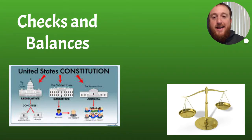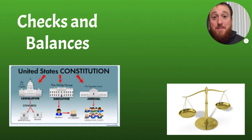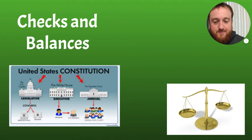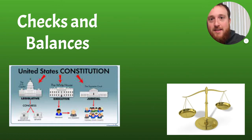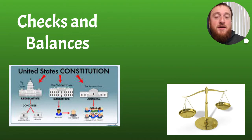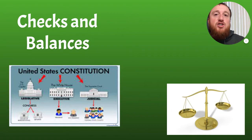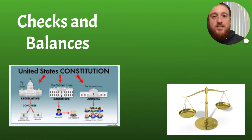What's up everybody, Mr. Klein here with a presentation today over checks and balances. We've been talking a lot about what's been going on with the government and the Constitutional Convention, and how we separated those powers into three branches. Now we talk about how do they check one another — checks are how they make sure that one branch of government does not have too much power over everyone else.